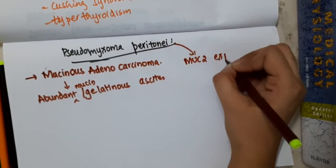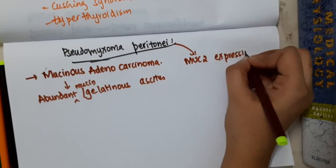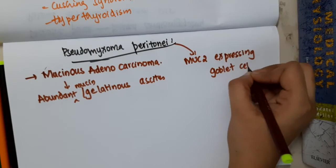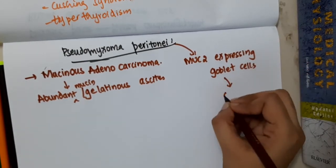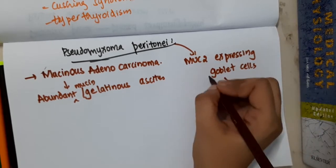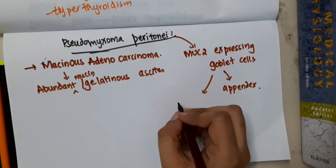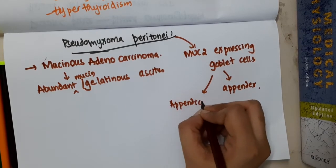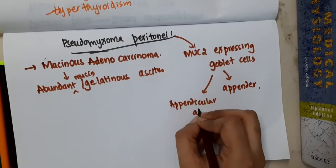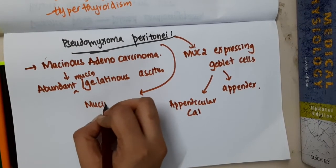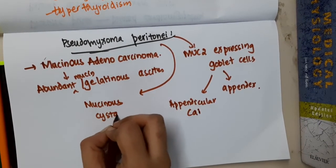Pseudomyxoma peritonei arises from mucin-expressing goblet cells which are found in the appendix, so it is seen in appendicular carcinoma. It is also seen in mucinous cystadenoma.